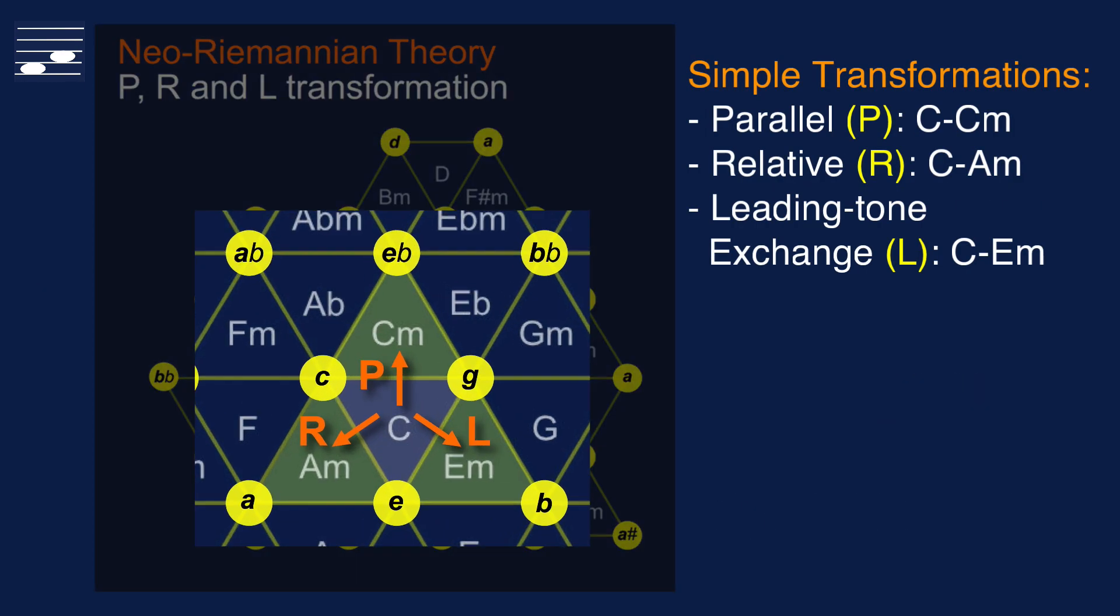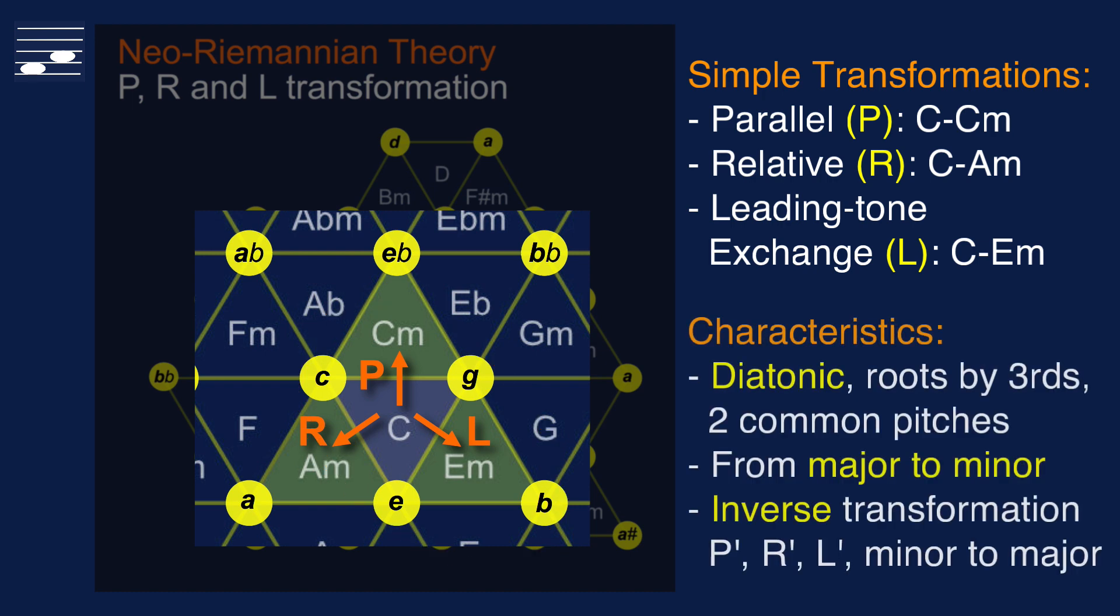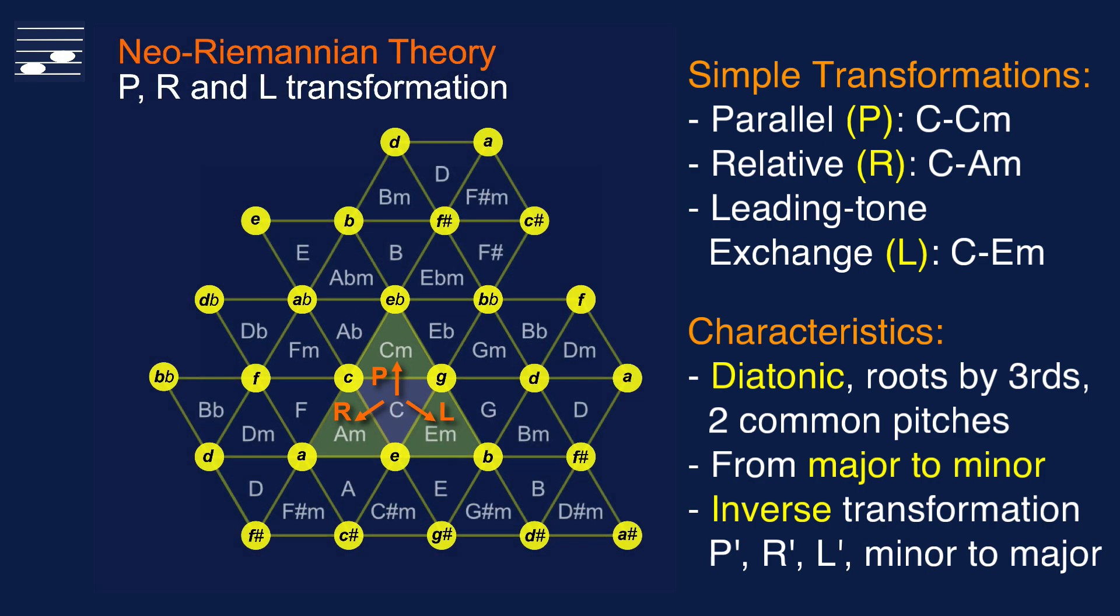The chord progressions may include the three elementary Riemannian transformations: parallel, relative and leading tone exchange shown here. These involve diatonic root movement and two common notes between triads. The chord type changes from major to minor or the reverse.